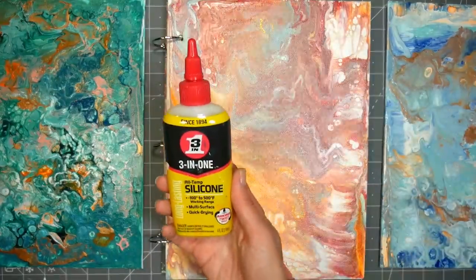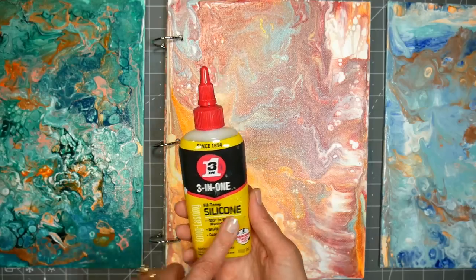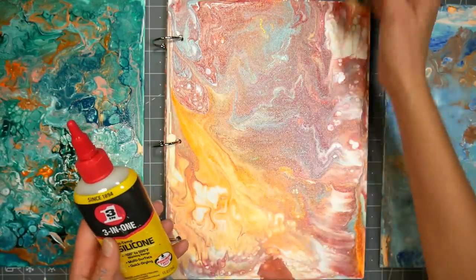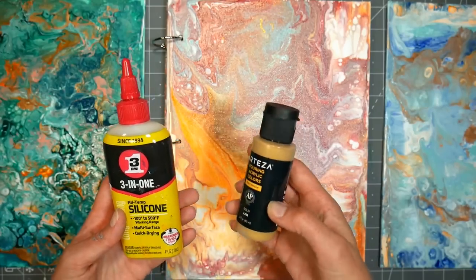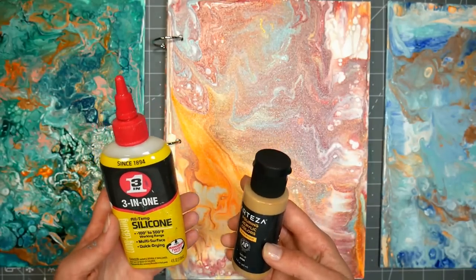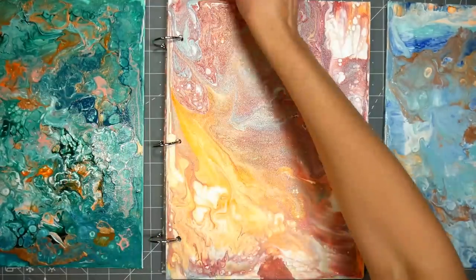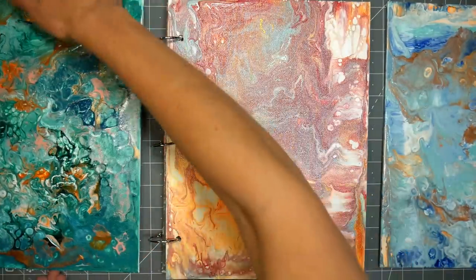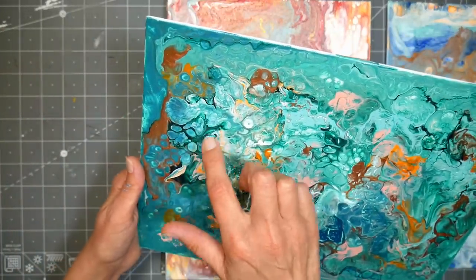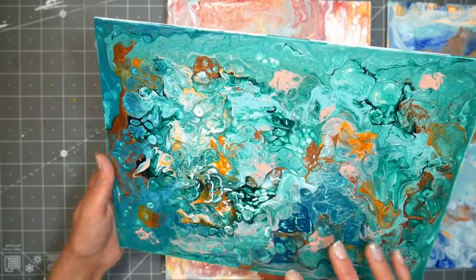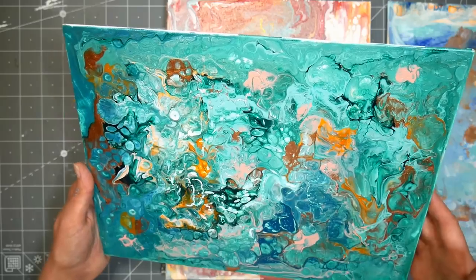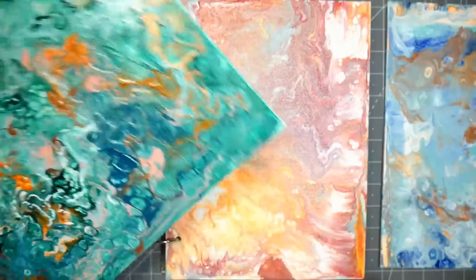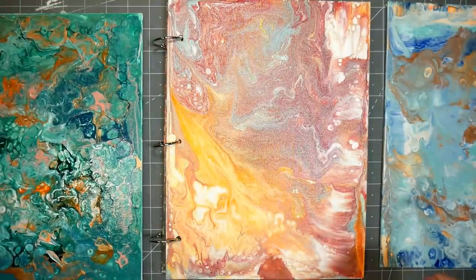This video is sponsored by 3-in-1 brand All Temp Silicone. This is the stuff that you add to your thinned acrylic paint or your pouring acrylic paints in order to give it the interesting little bubbles and cells in the surface. So I'm going to share a technique today that is going to give you a very repeatable design and also isn't going to waste a lot of products. I like this because it's a great beginner technique and you can get the result that you want very quickly with very little waste. So without further ado let's get messy and do some paint pouring.